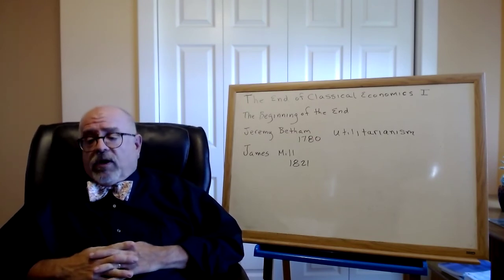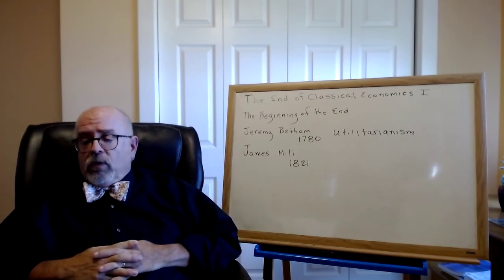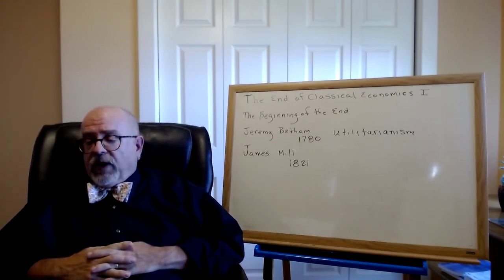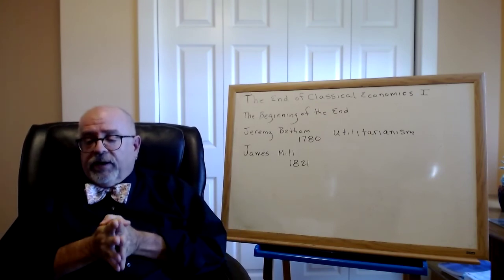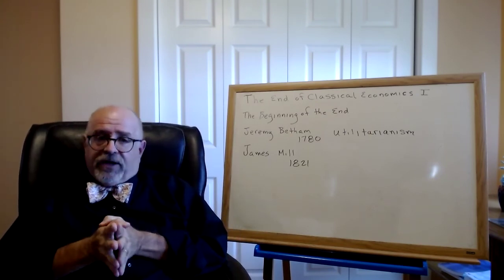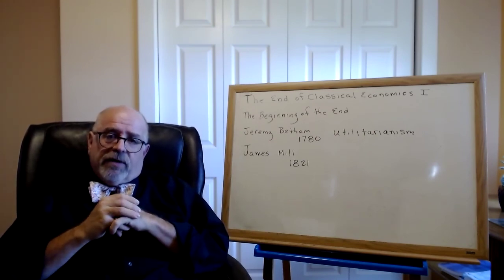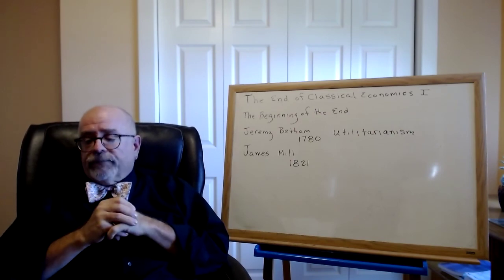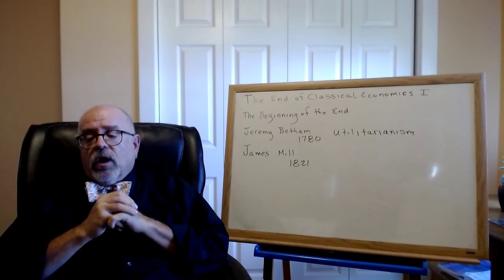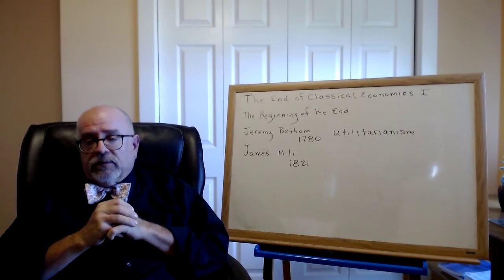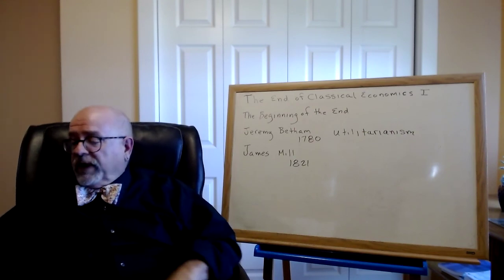James Mill was a classical economist and close friend of Jeremy Bentham who made some effort to introduce the philosophy of utilitarianism into economics, with limited success — it really didn't catch on among the classical economists. But most importantly, he was the father of John Stuart Mill, and this takes us to the last of the classical economists.